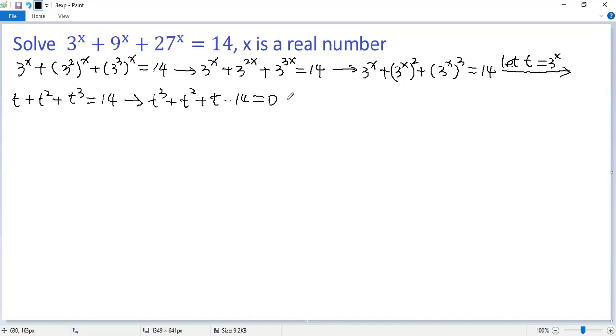According to the integer zero theorem, the possible solutions of the equation would be the factors of 14. So the possible value for t would be plus minus 1, plus minus 2, plus minus 7, and plus minus 14.